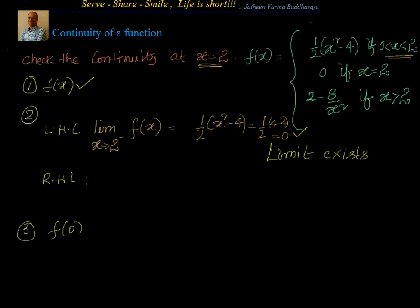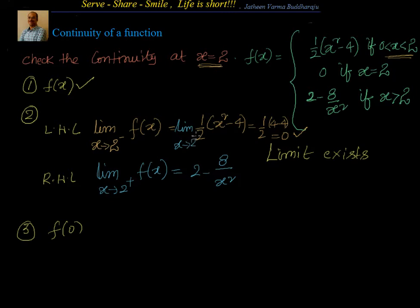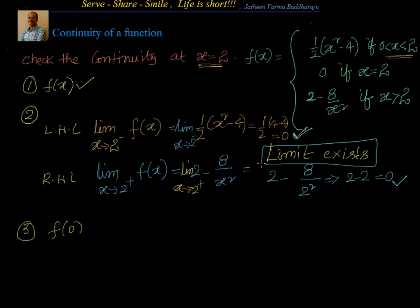Now let's look at the right-hand limit. The limit as x tends to 2 plus of f of x. If x is greater than 2, f of x is given by 2 minus 8 by x square. So the limit as x tends to 2 plus is equal to 2 minus 8 divided by 2 square, that's 2 minus 2, equal to 0. The left-hand limit is 0 and the right-hand limit is also 0, so the limit exists and is equal to 0.